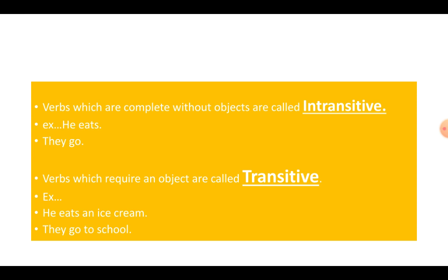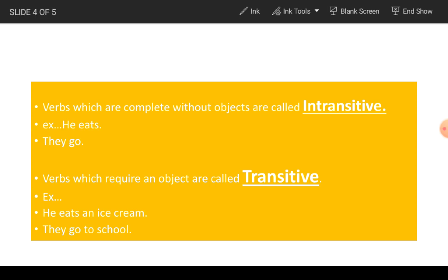Now, verbs which require an object are called transitive. In the first two sentences, eats and go are intransitive verbs. In the next two sentences, eats and go, same verbs but they have become transitive. Why? Because they have an object with them. Same verb but in the first two sentences, they are intransitive. In the next two sentences, they are transitive. Why? Because there are objects in the sentences.